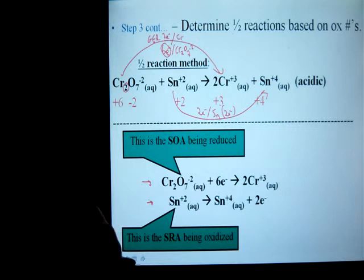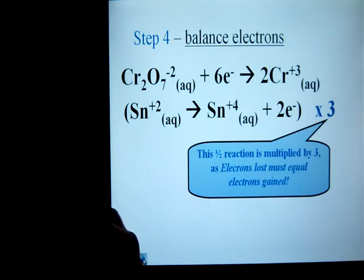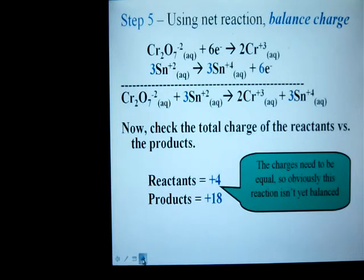So now, next thing we're going to do is to balance those electrons. We cannot have unequal numbers of electrons. So I take my tin half reaction and multiply it by three, like it says there. And then come up with my net from that. So there's my net reaction, where my electrons are balanced. But I'm still not done.